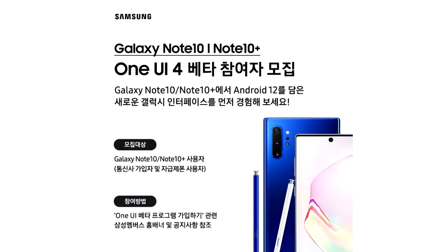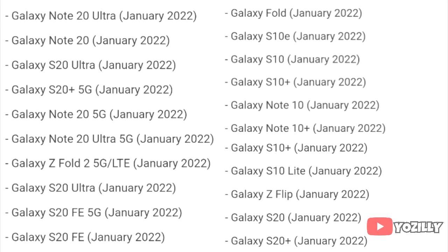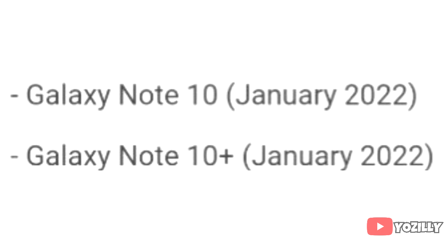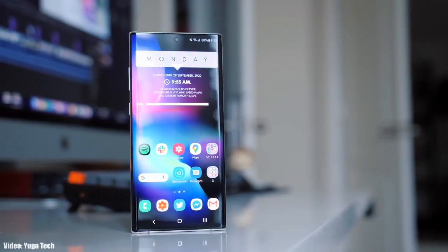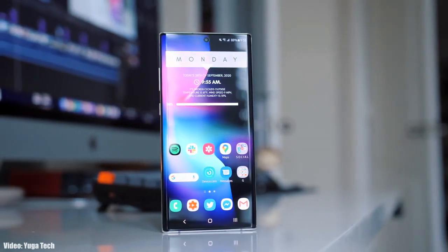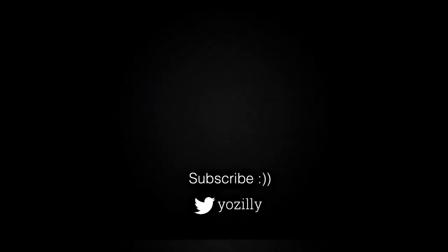This beta update is currently available to download in South Korea, but in a few days the beta update will expand to other regions as well. Samsung will release the stable Android 12 One UI 4.0 update in January 2021 according to their roadmap, but before that you will see a couple of beta updates. That's pretty much it — give this video a thumbs up, subscribe to the channel for more future updates, and I'll see you guys in the next one.